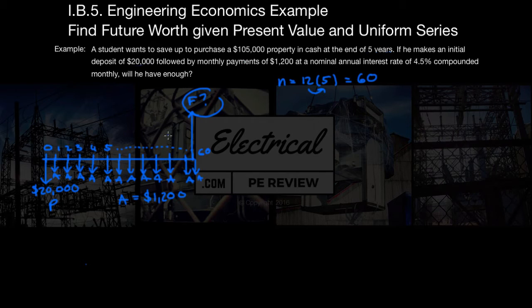Now, this cash flow diagram is actually two cash flow diagrams joined together. We have a present worth value - we want to know what is this $20,000 worth at the end of 60 periods? And the other is a uniform series - what are all of these monthly payments going to be worth at the end of a 60 month period? So let's break this up into the two equivalent cash flow diagrams.